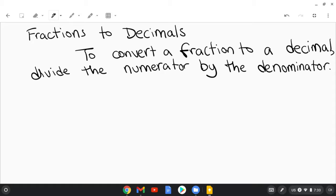So to turn a fraction into a decimal, you simply divide the numerator by the denominator. For example, if I had 3 eighths, I would go 3 divided by 8, and I would get 0.375.